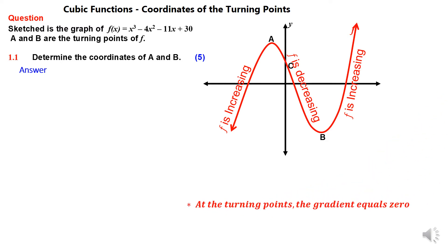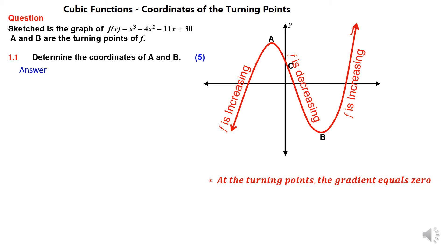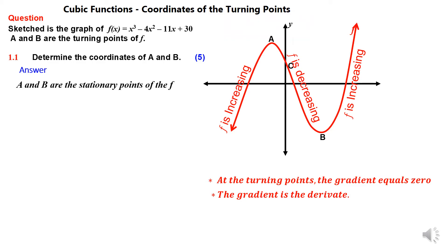We need to remember: what is gradient? Gradient is the derivative. If you differentiate a function, what you get is the gradient of the function. So at the turning point, the gradient is equal to zero — and the gradient is the derivative. Because the gradient at the turning point is equal to zero, it means the derivative at the turning point is equal to zero.